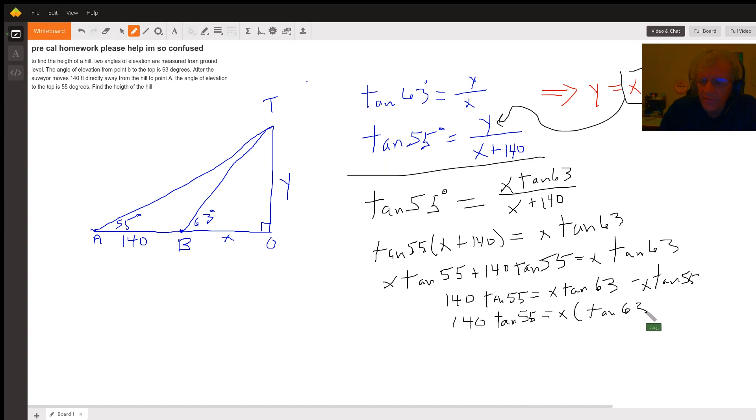Let's move over here and get x equals 140 tangent of 55 divided by x tangent of 60—whoops, just tangent of 63, sorry—minus tangent of 55.